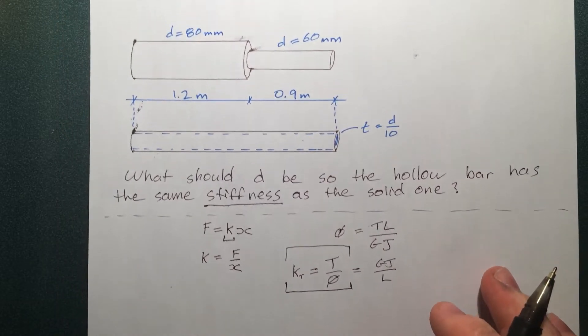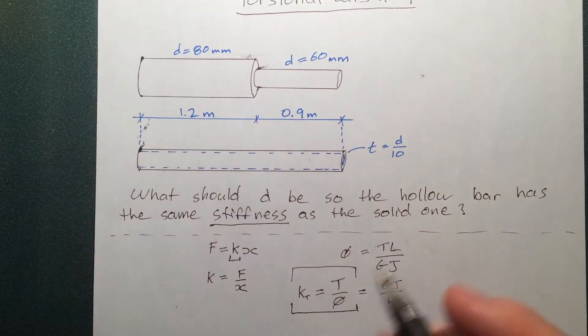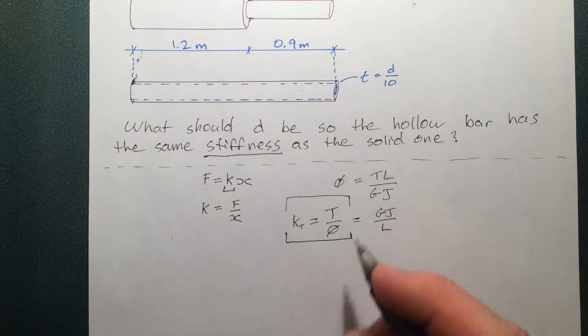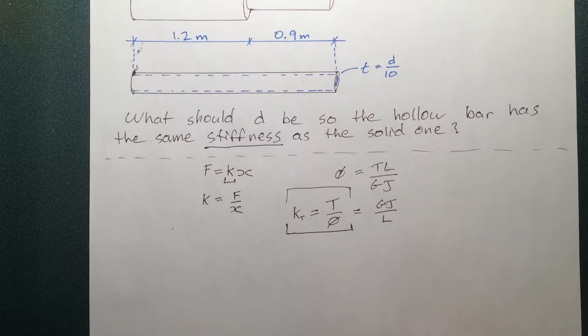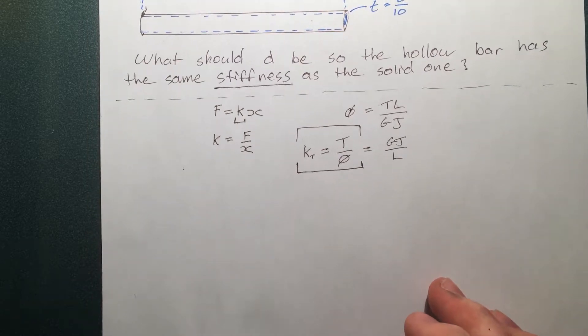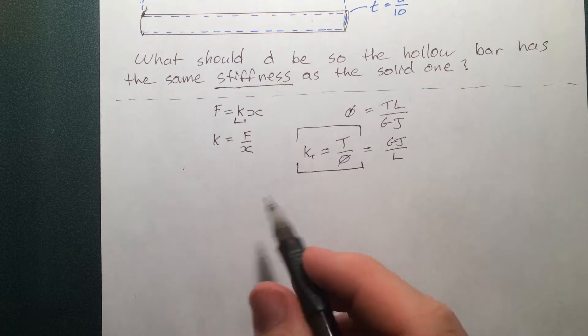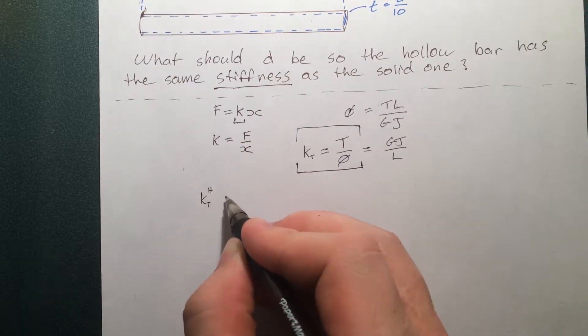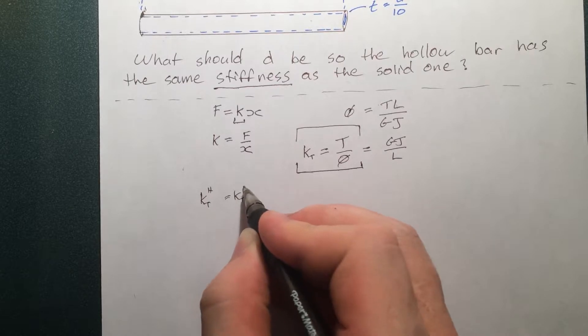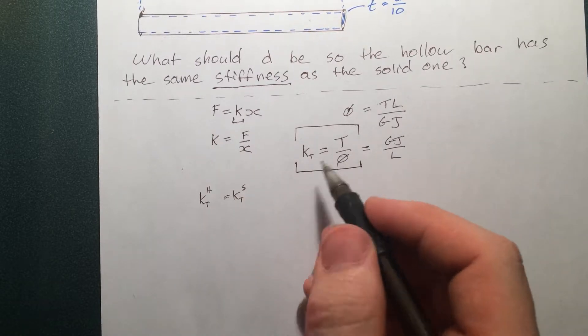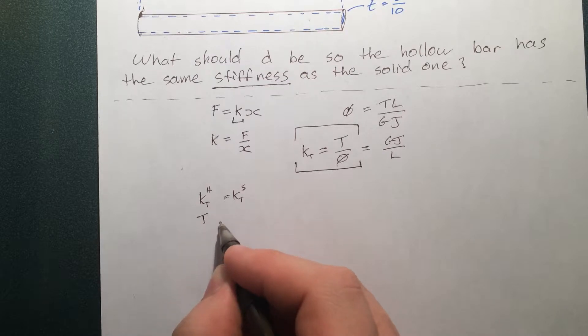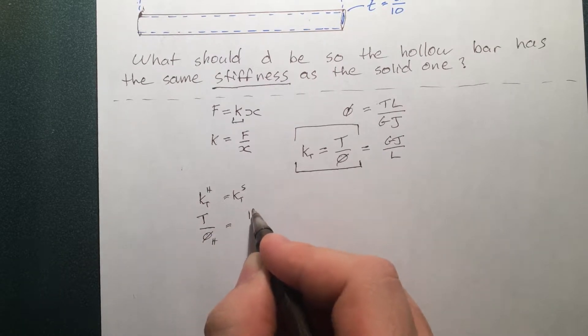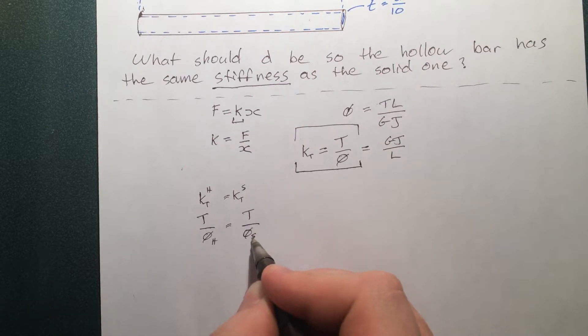And we're going to assume that we're just going to apply an arbitrary torque, T, on each end. We're not going to worry about the G J over L in this question. So, in order to have the same torsional stiffness, we can say that KT in the hollow has to equal to KT in the solid. So that's basically like saying this here.